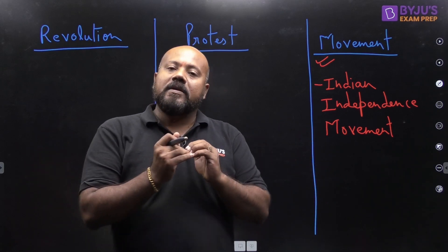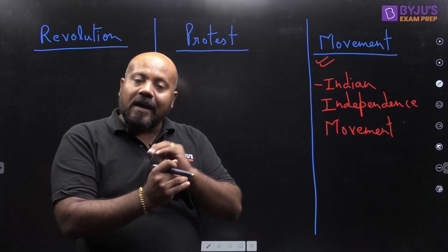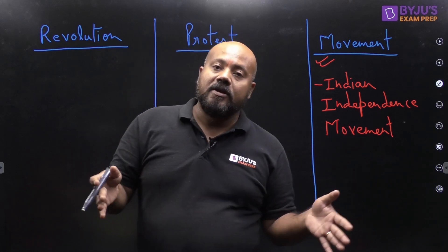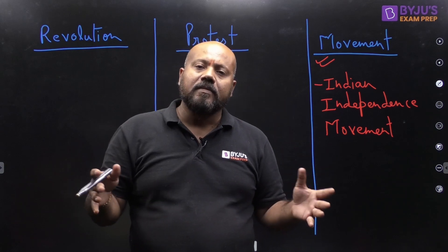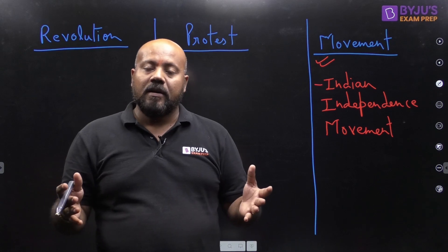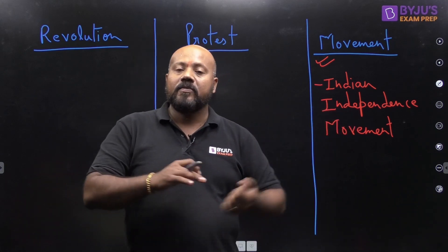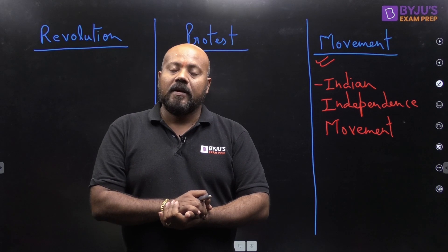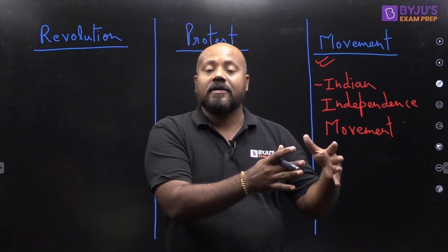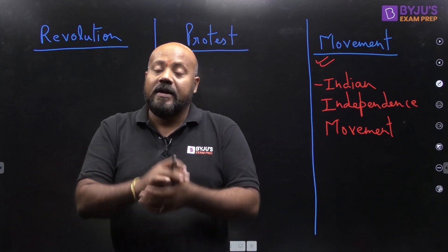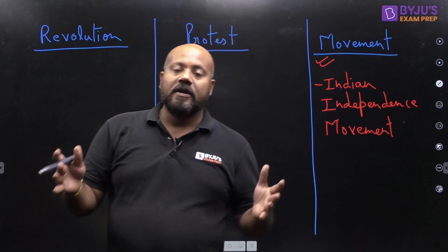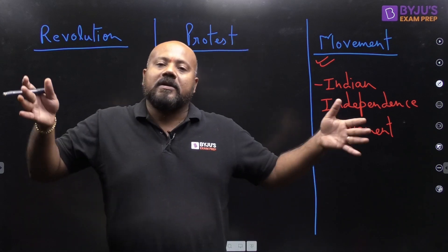Movement is a process where changes are comparatively slow, so there is no sudden change in terms of structure, alignment, overall system, or policies. Take the example of the Indian independence movement: in 1920 there was the non-cooperation movement, in 1930 the civil disobedience movement, in 1942 the quit India movement, and finally in 1947 India got independence. It was a long process, it was a journey.